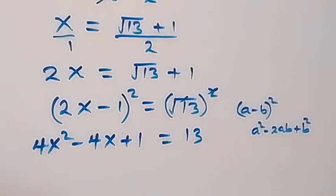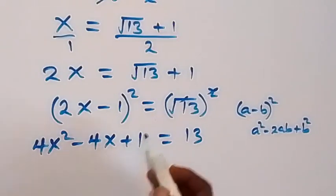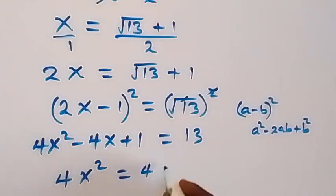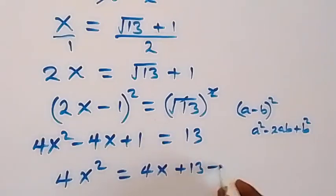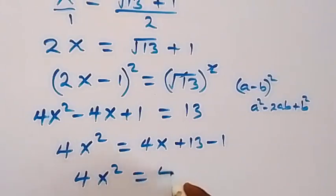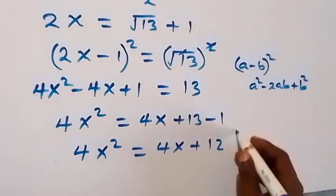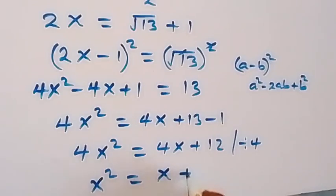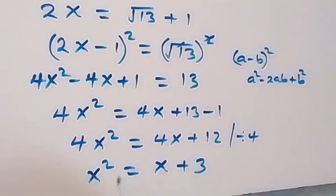Taking −4x + 1 to the right side: 4x² = 4x + 13 − 1, so 4x² = 4x + 12. Dividing through by 4 gives x² = x + 3. Let's keep this equation.